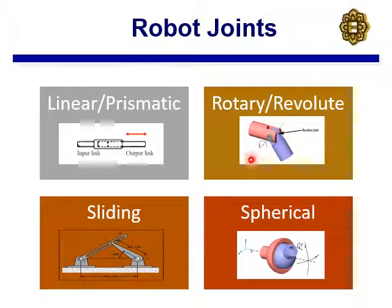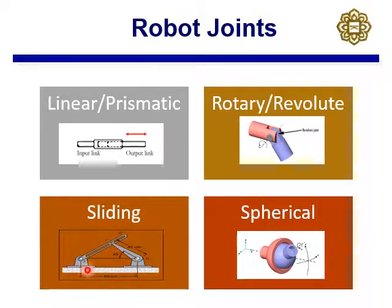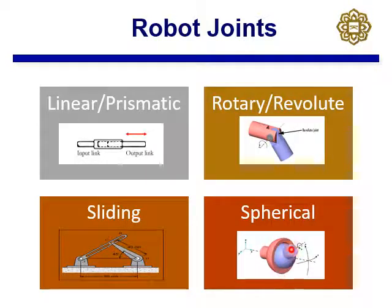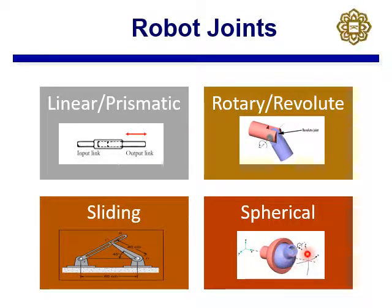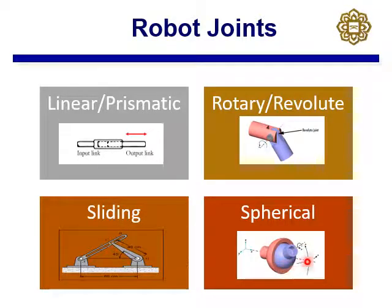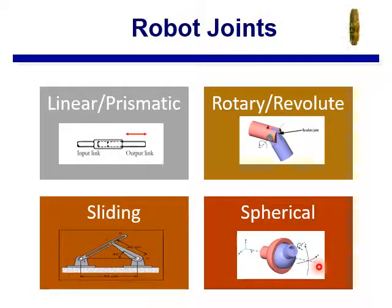A rotary or revolute joint is basically a simple hinge joint where you can rotate two links with respect to one another. A sliding joint has a hinge and a slider at the same time. A spherical joint is similar to a ball-and-socket joint — a solid sphere going into a hollow sphere, giving you three rotary effects with respect to X, Y, and Z.